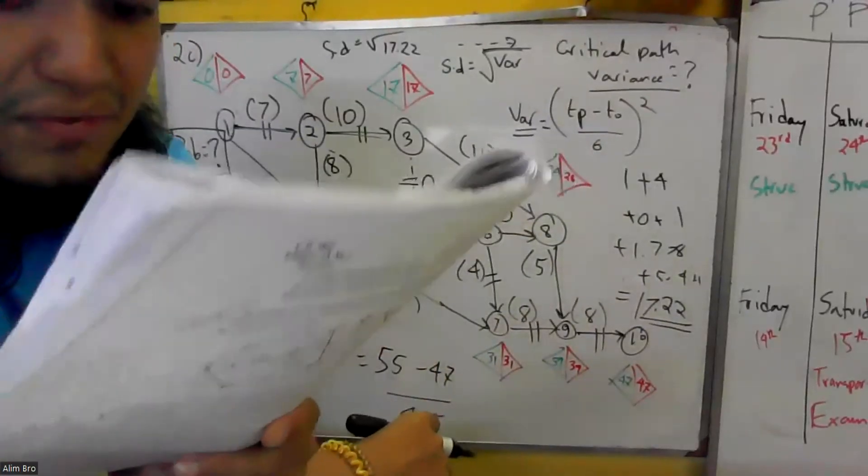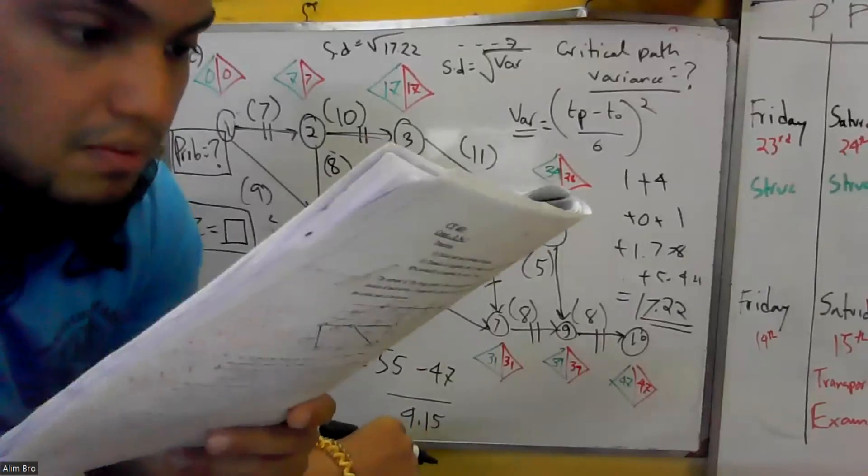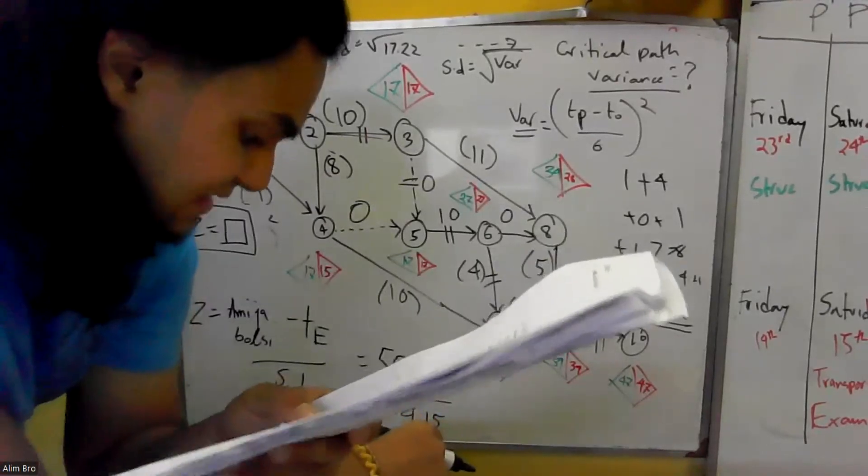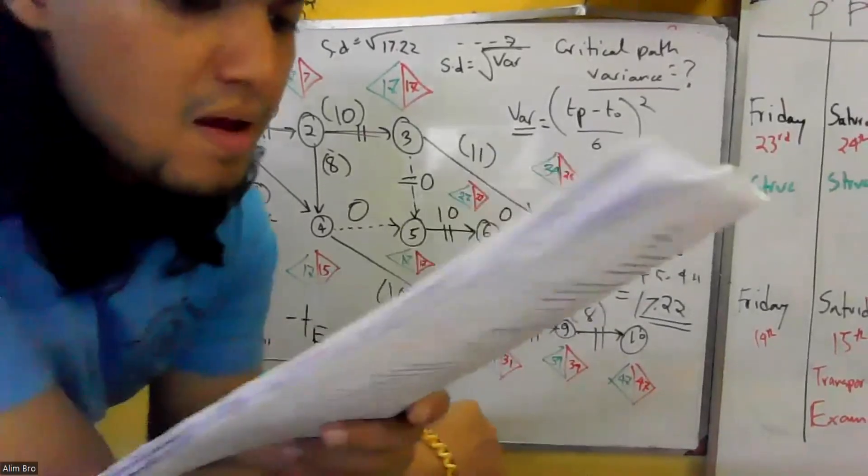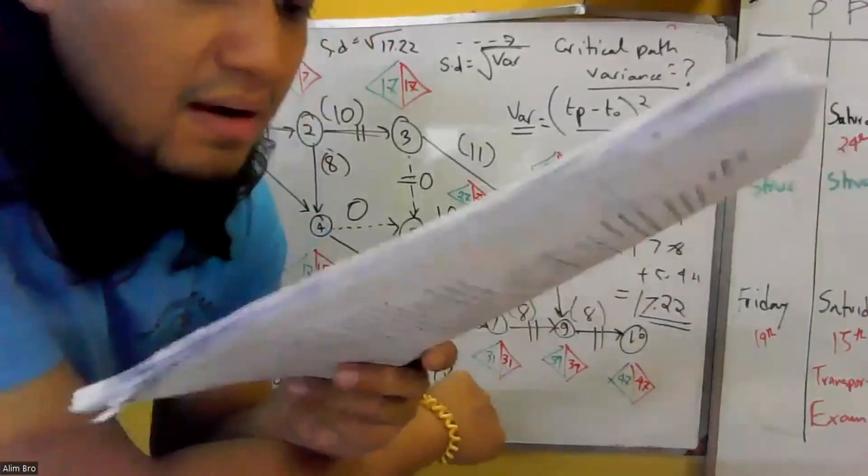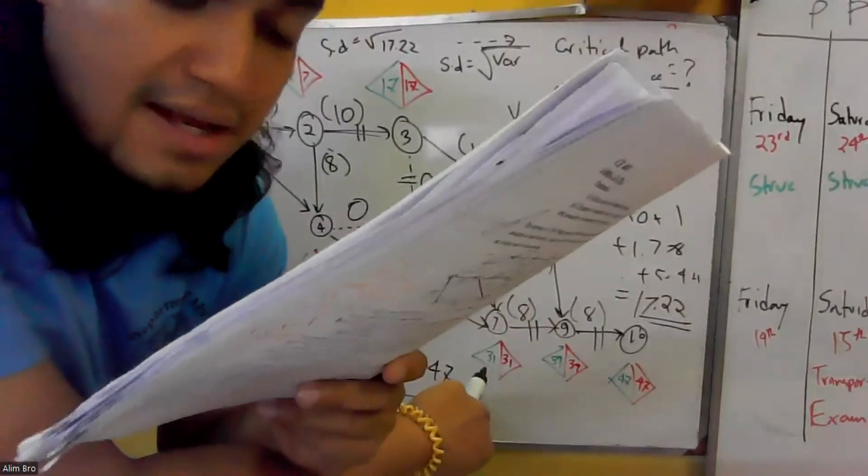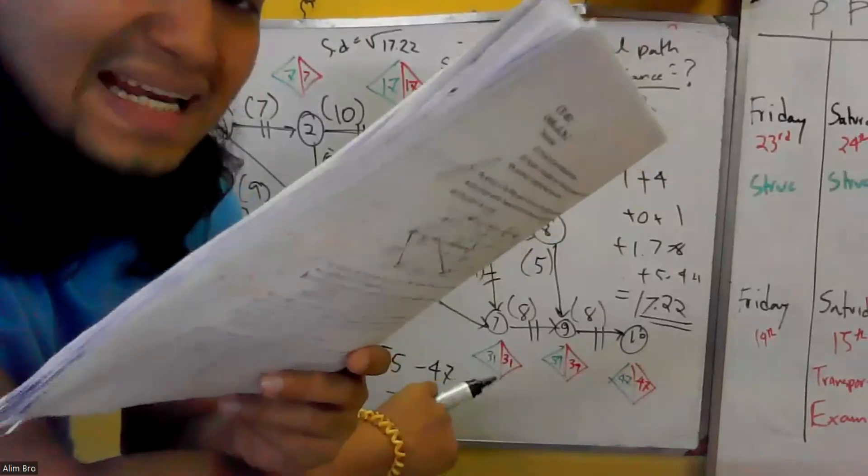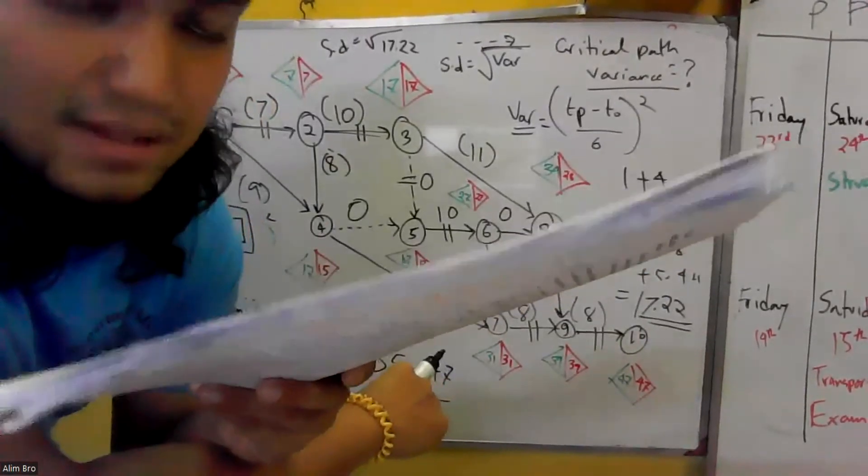From the following diagrams, find the interrelationships. From the following network diagrams, find the interrelationships among the activities one, two, three. Interrelationship makes sense to you?